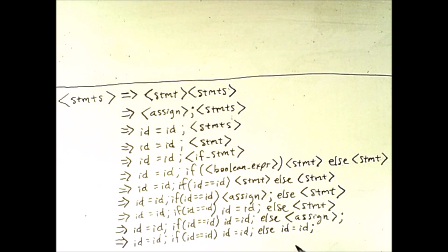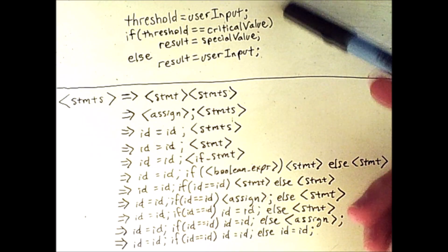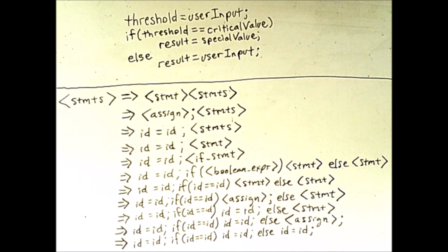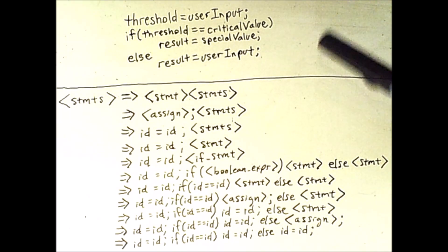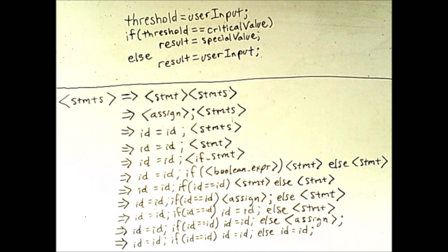If we fill in valid identifiers and adjust the white space, we can turn this final result into a code snippet. This code snippet matches the final sentence at the bottom, except the IDs are replaced with valid identifiers. This looks like it would be valid in a language like Java, where we don't care about white space.